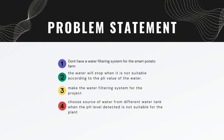Problem statement: first, there is no water filtering system for the smart potato farm. Second, the water will stop when it is not suitable according to the pH value. Third, we need to make a water filtering system for the project. Lastly, choose a source of water from a different water tank when the pH level detected is not suitable for the plant.